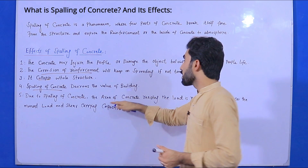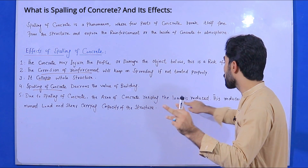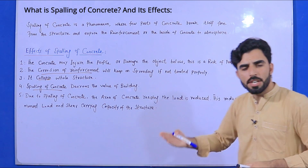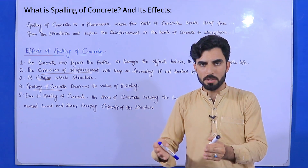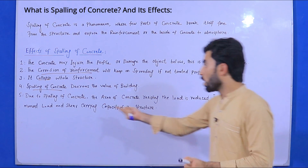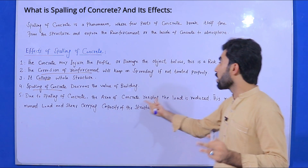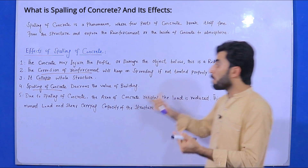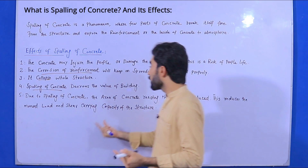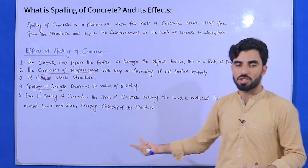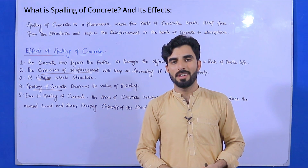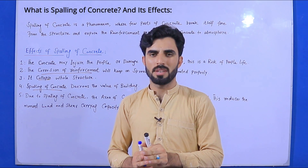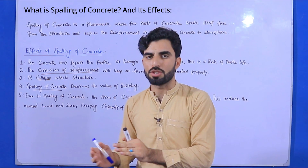The fifth effect: due to spalling of concrete, the area of concrete resisting the load is reduced compared to a proper concrete slab. Therefore, spalling reduces the moment load and shear-carrying capacity of the structure, and the life of the slab or structure will be less compared to other properly built projects.